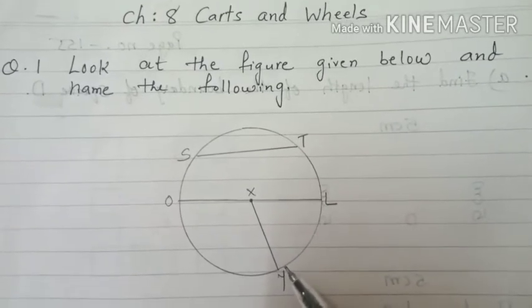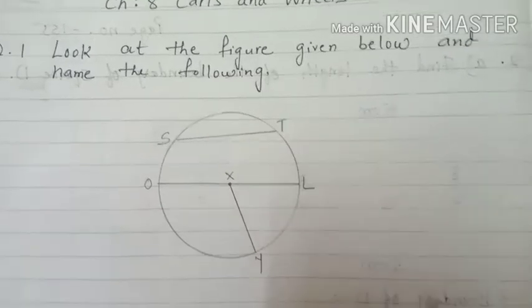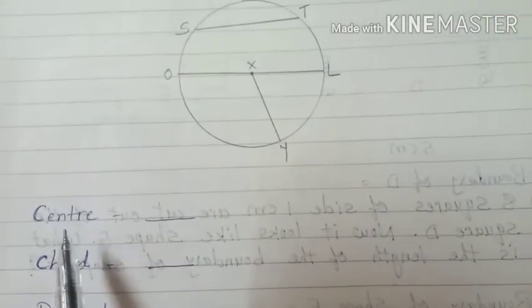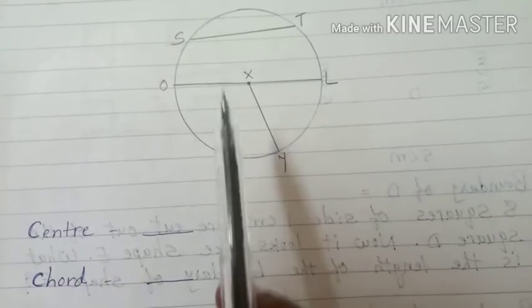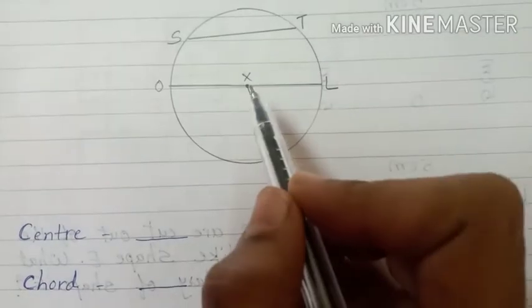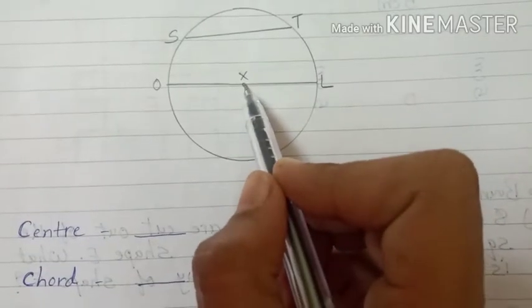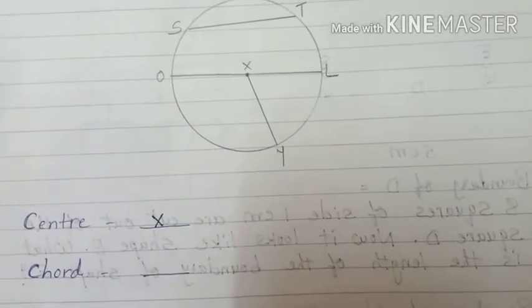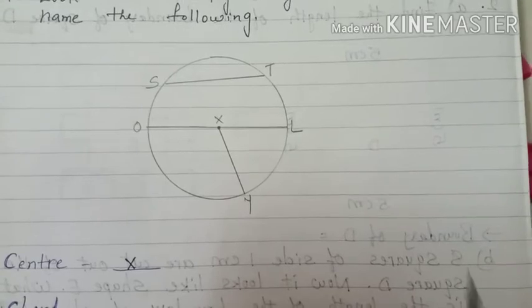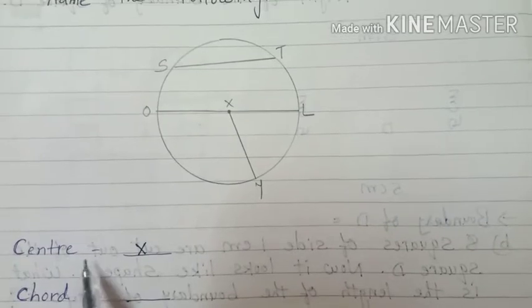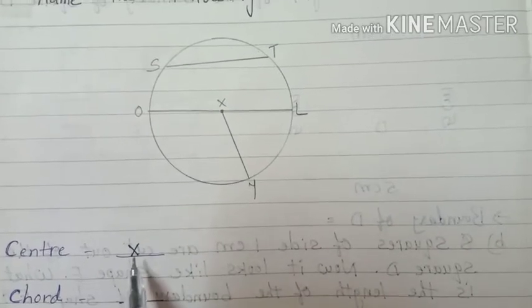Students, what we have to do here is write the name. Which alphabet shows the center? This point is the center - that is X. So you have to write: center is X. The center point name is X, so here you have to write which is the center point - that is X.